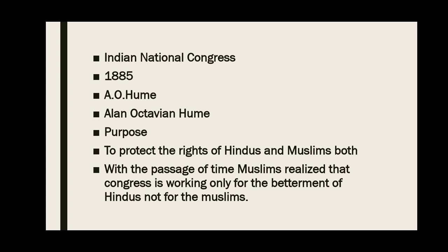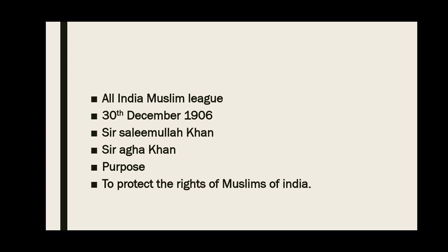Then at that time, Muslims felt the need of a separate political party for them. Then in 1906, All India Muslim League was formed. All India Muslim League was formed on 30th December 1906. The purpose was to protect the rights of Muslims of the India subcontinent.